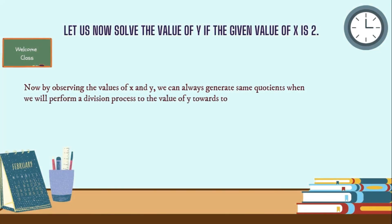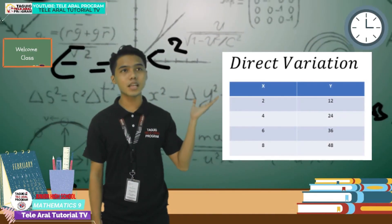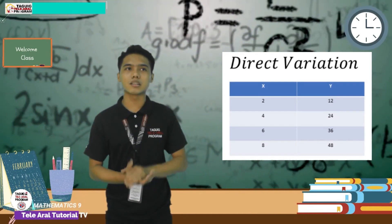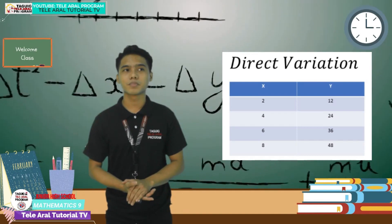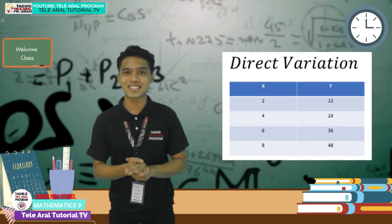Now, by observing the values of x and y, we can always generate the same quotients when we perform a division of the value of y by the value of x, which is the constant of variation. With that, we can come up with the formula k equals y over x, which helps us solve the constant of variation. We can also observe that an increase in x causes an increase in y, and a decrease in x causes a decrease in y. That tells us the relationship of two variables in direct variation.